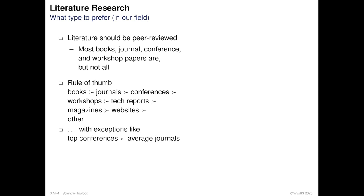Your literature research should ideally be based on high-quality sources. All literature you use should be peer-reviewed. Fortunately, most books, journal, conference, and workshop papers undergo a peer-review process. As a rule of thumb, there is an inherent order of sources you should attribute credibility to. Books are ranked higher than journals, which in turn are ranked higher than conference papers. Next are workshop papers, then technical reports.